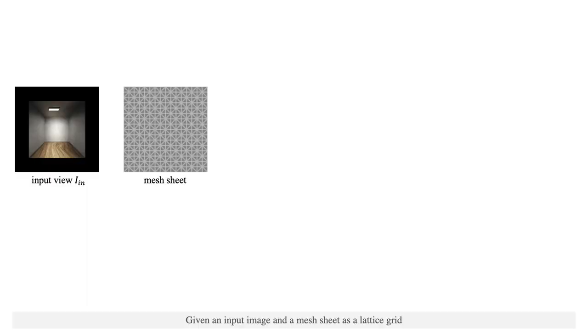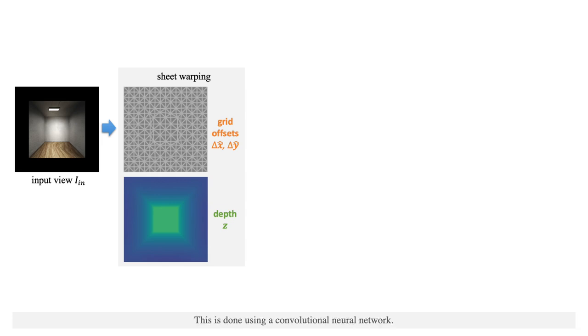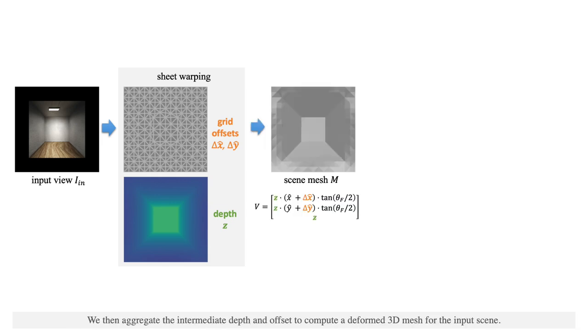Given an input image and a mesh sheet as a lattice grid, we deform the mesh sheet by predicting the spatial offset and the corresponding depth for each vertex of the sheet. This is done using a convolutional neural network. We then aggregate the intermediate depth and offset to compute a deformed 3D mesh for the input scene.